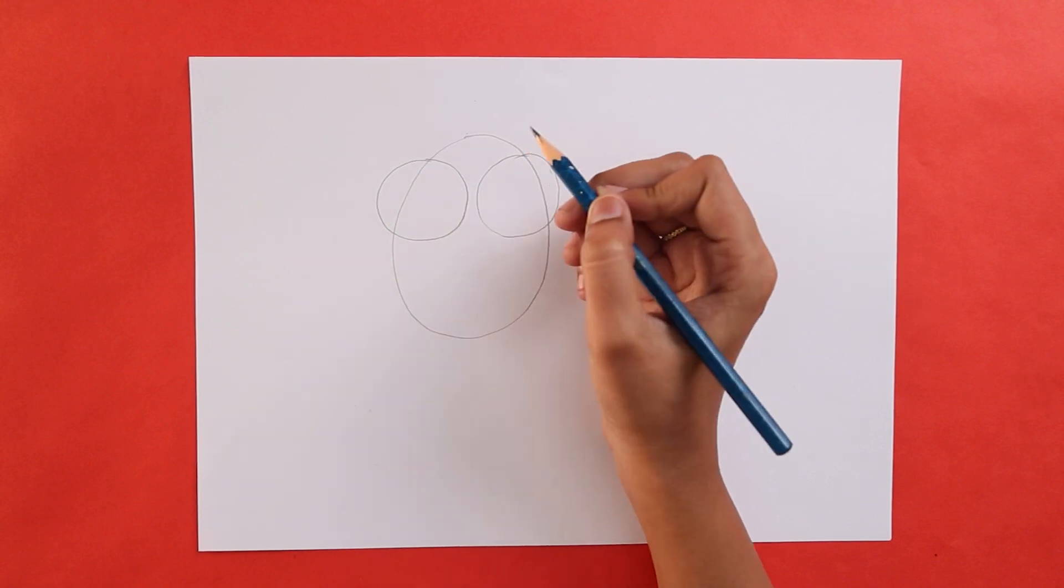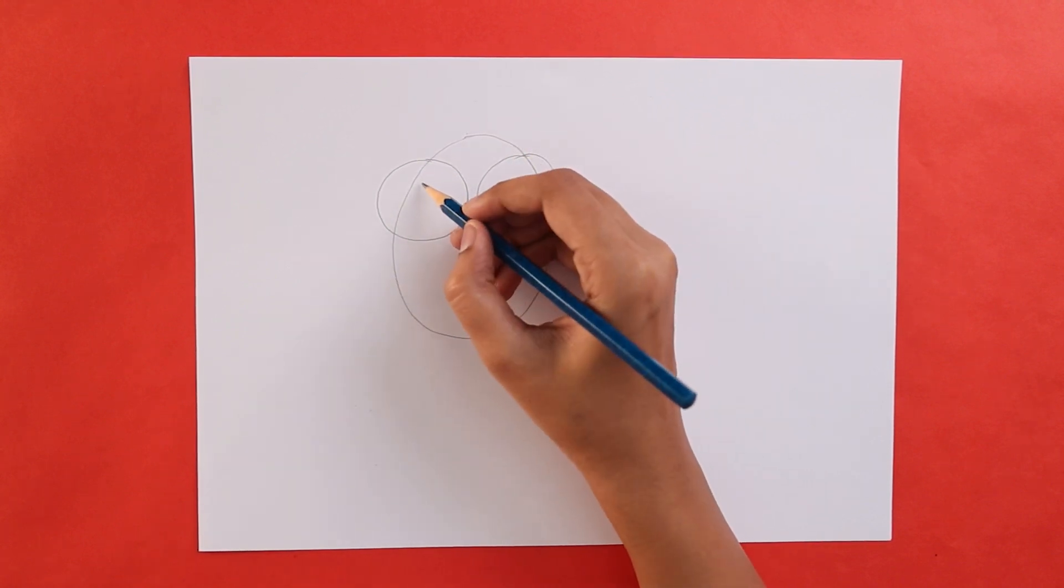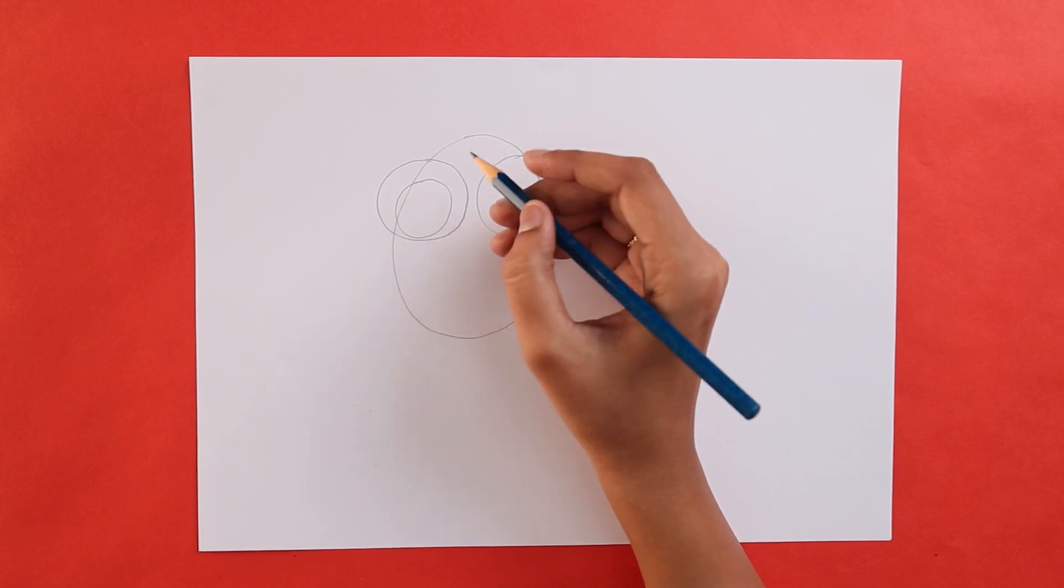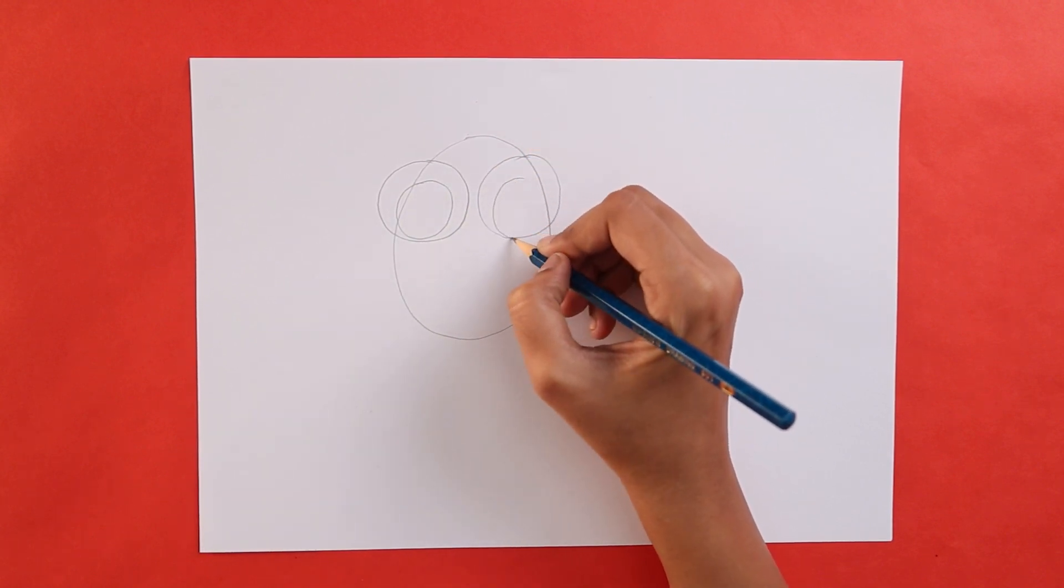Once we are done with that, we'll draw another circle in the circle we just drew. Sounds confusing? Well, don't worry. Just look at the video and you'll get it.